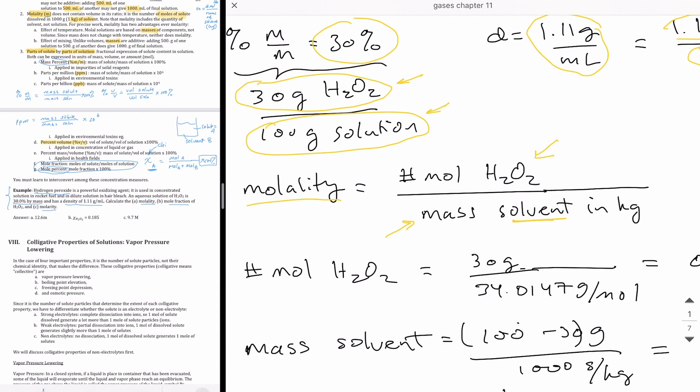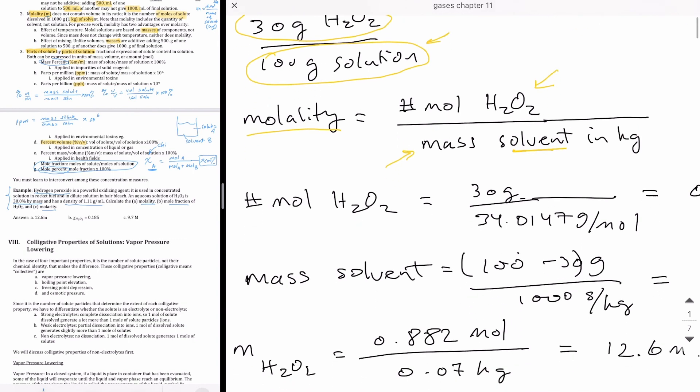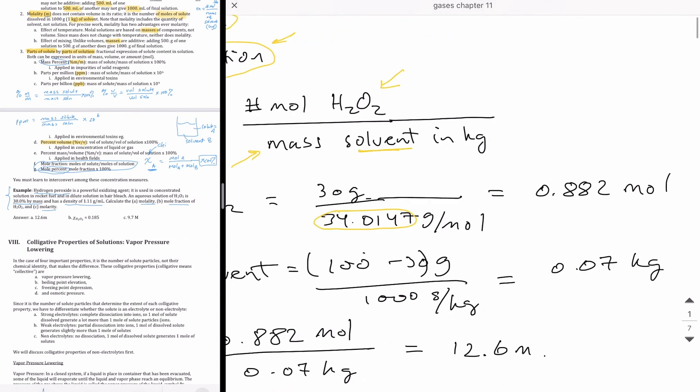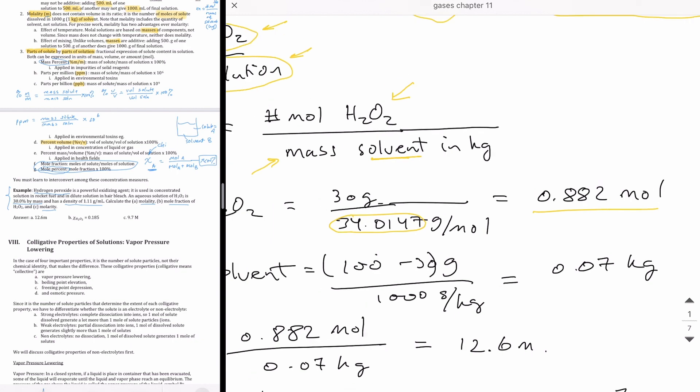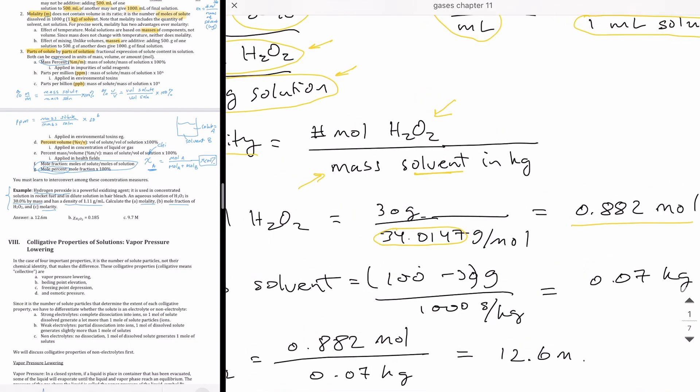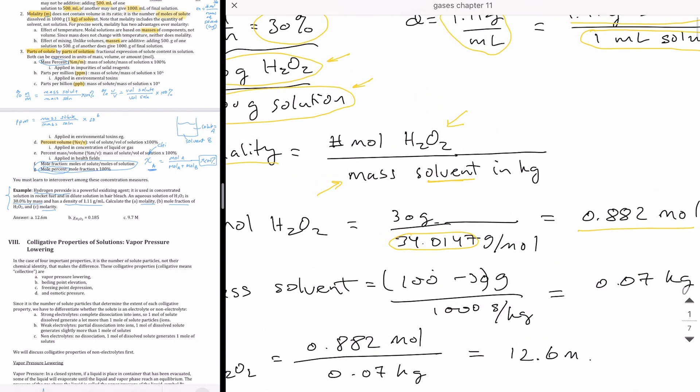So we can use that 30 grams and converted number of moles. Molar mass of hydrogen peroxide is given right here. When I do that calculation, I get 0.882 moles of hydrogen peroxide. So that solves for the numerator of the molality.